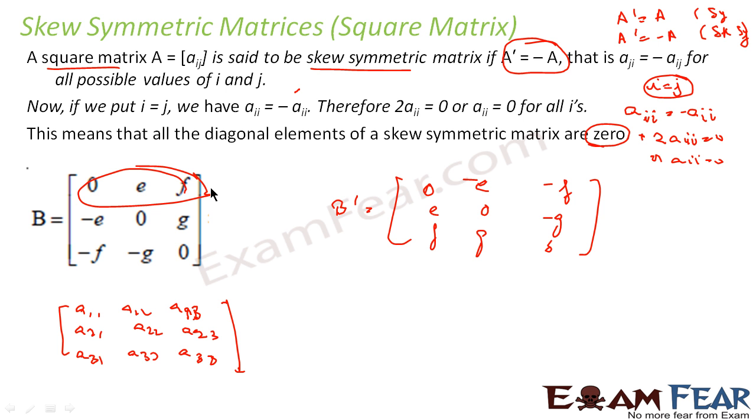So we compare - all the elements have opposite signs. 0 and 0. e becomes minus e, minus e becomes e. f becomes minus f. 0 is 0, it does not matter because 0 is neither positive nor negative. g becomes minus g.